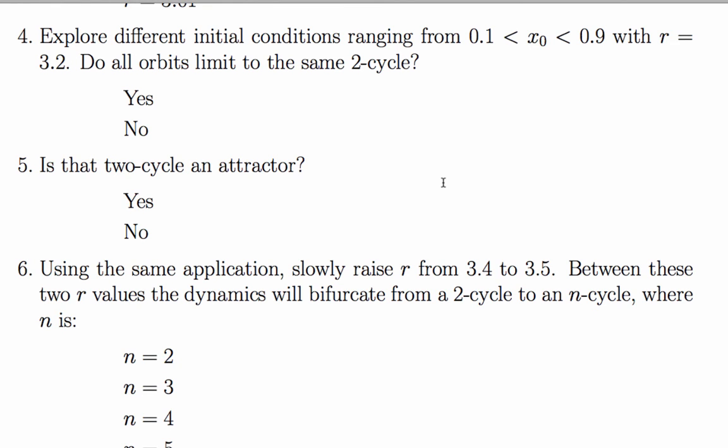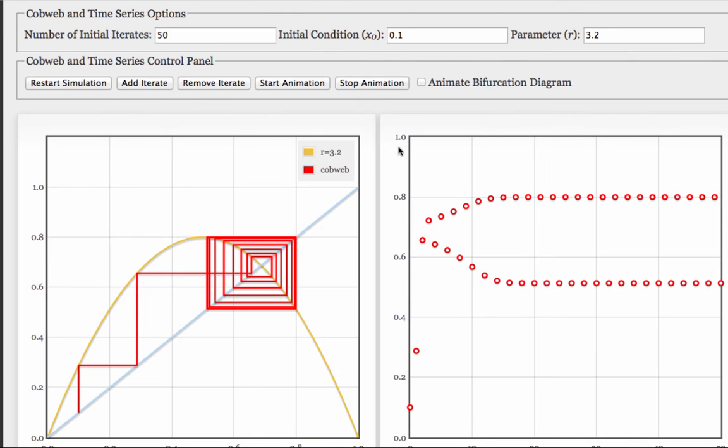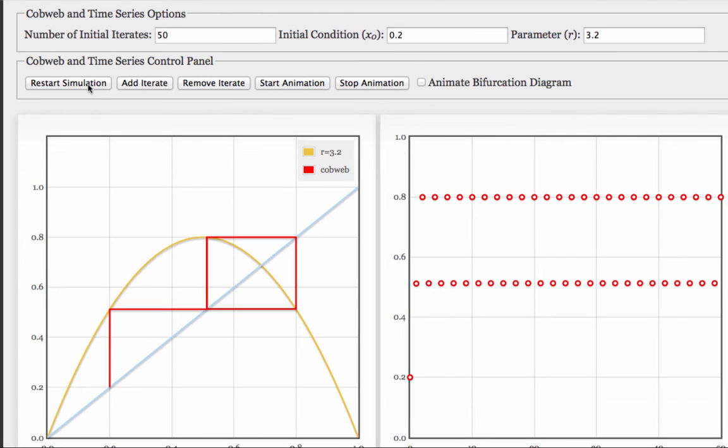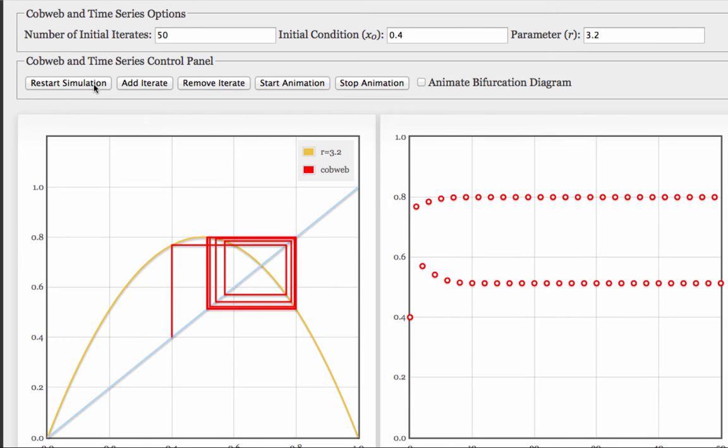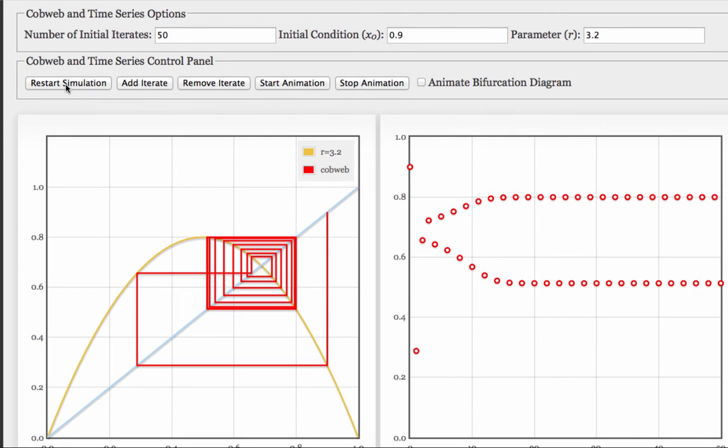Question 4 is about basins of attraction and attractors. When you start from point 1 with r equals 3.2, you reach a 2-cycle. Here's x equals point 2, x equals point 3, x equals point 4. These all appear to be going to the same 2-cycle. x equals point 5, x equals point 7, x equals point 9.